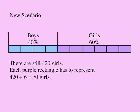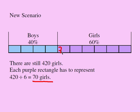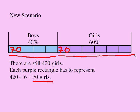To find the number of girls in each little chunk, I divide 420 by 6 chunks, which gives 70 per chunk. Each chunk in the boys' section also represents 70, because these were cut into equal pieces. So how many boys do I have now? 70 times 4 equals 280 boys. And the number of girls hasn't changed — 70 times 6 is still 420.